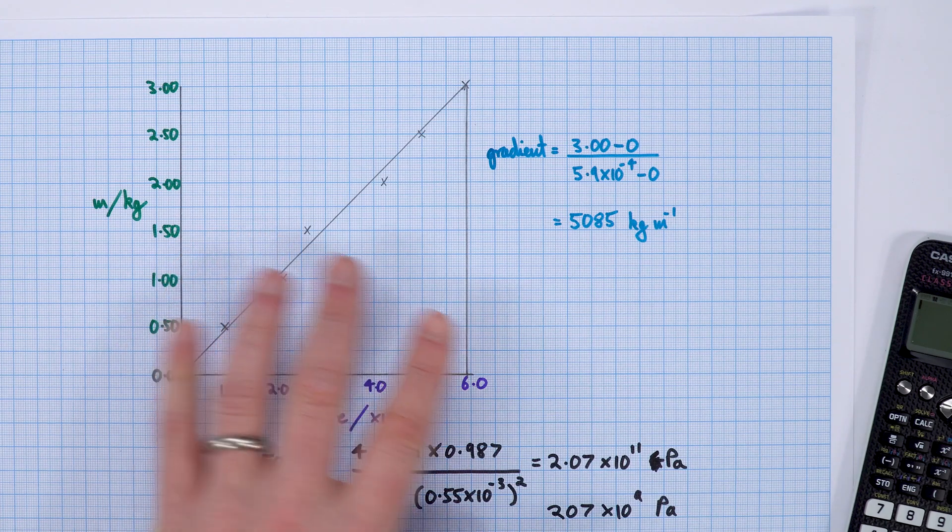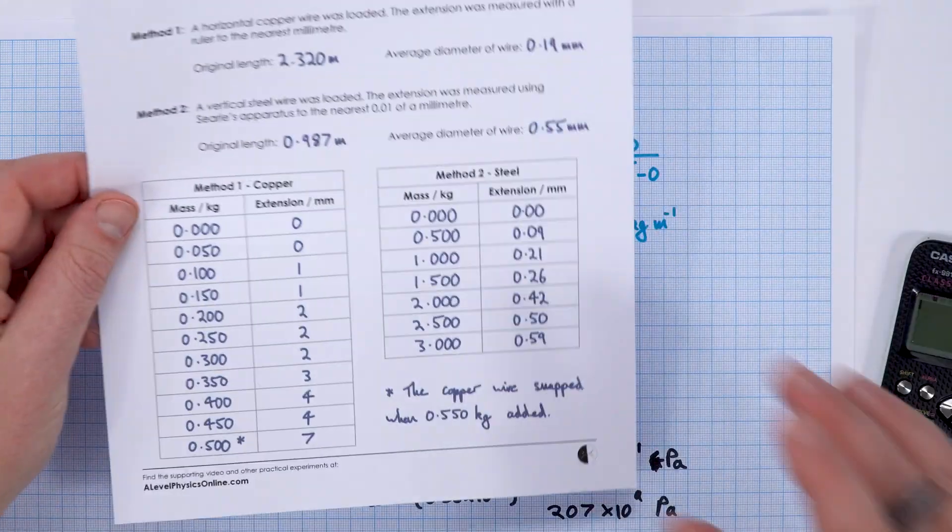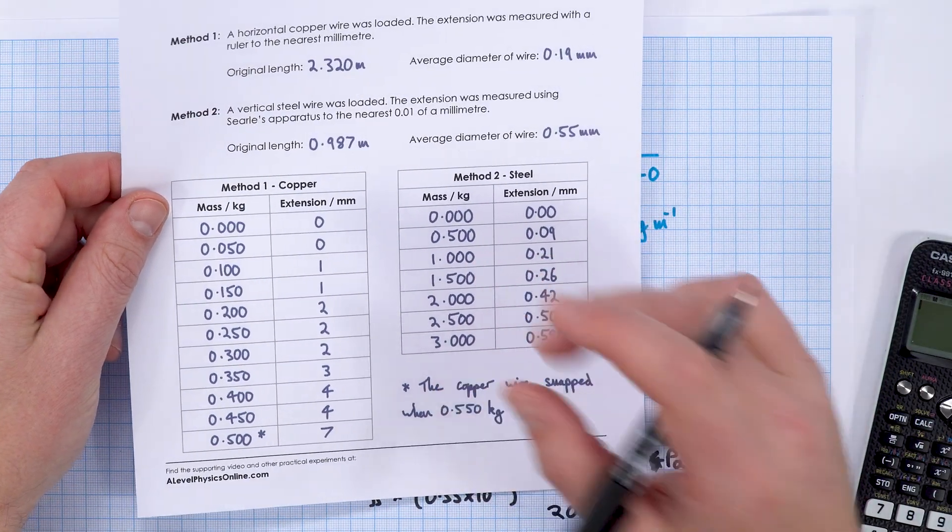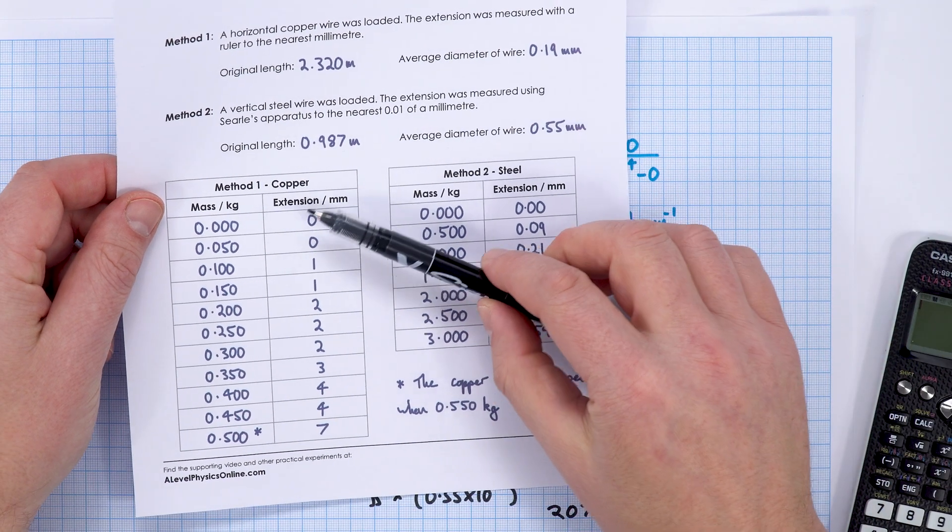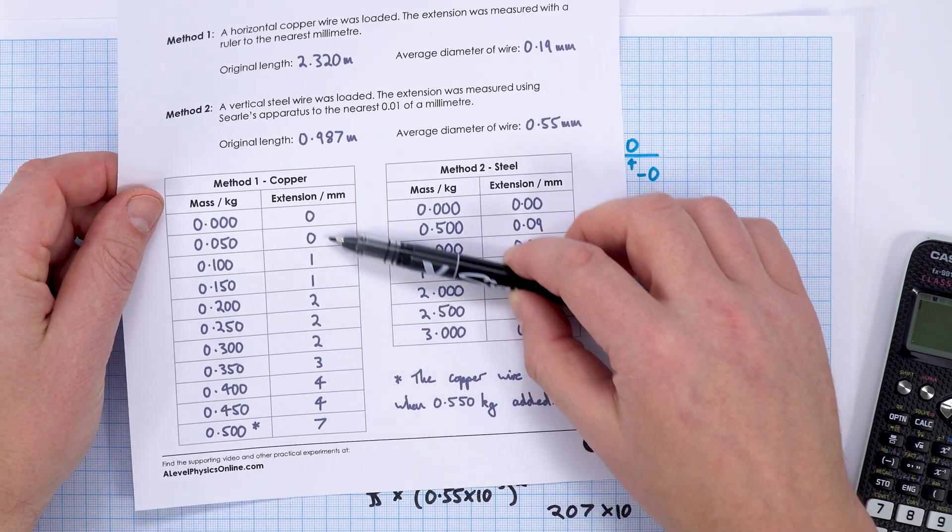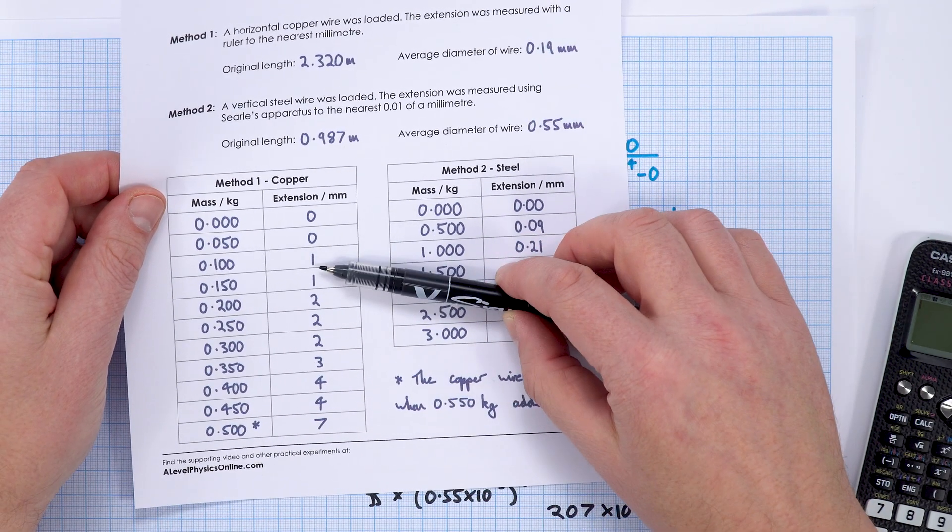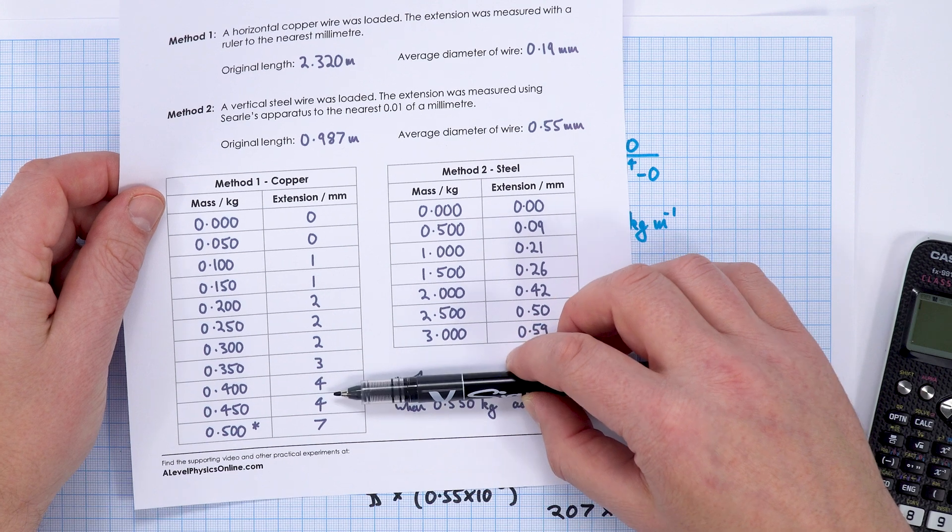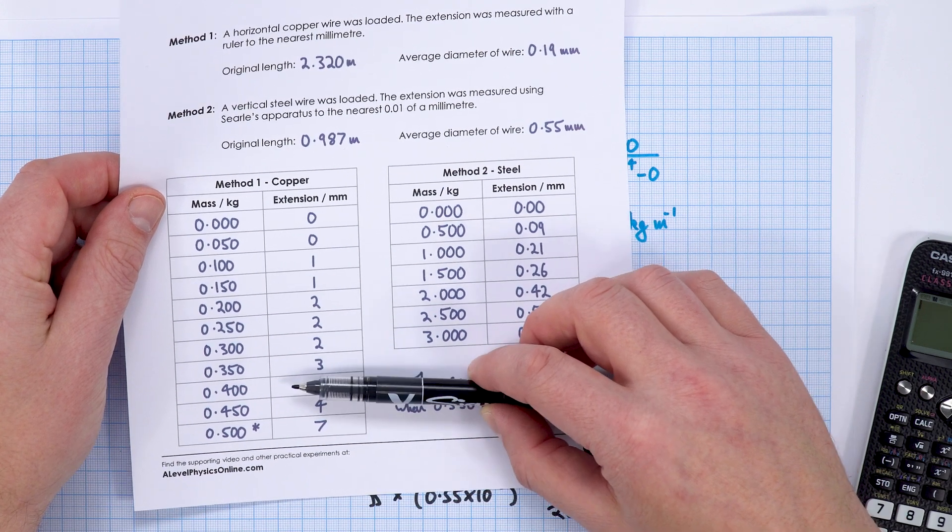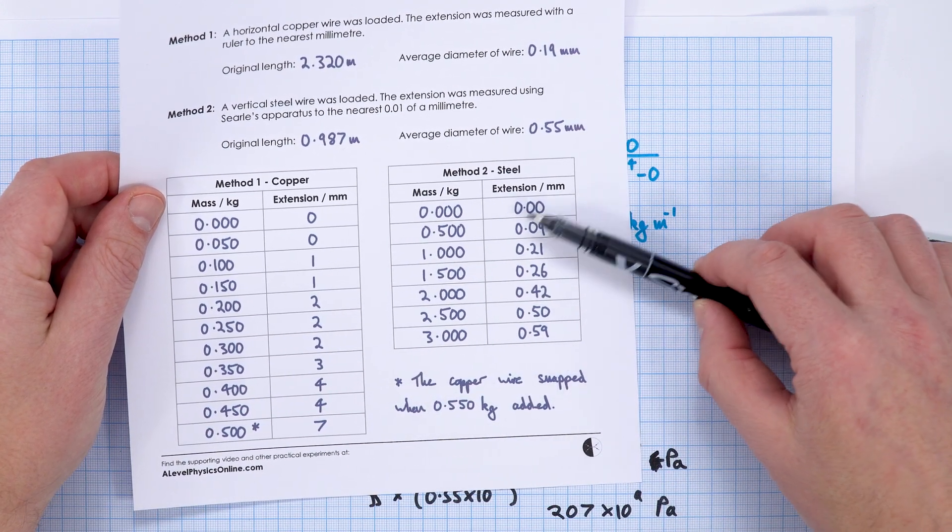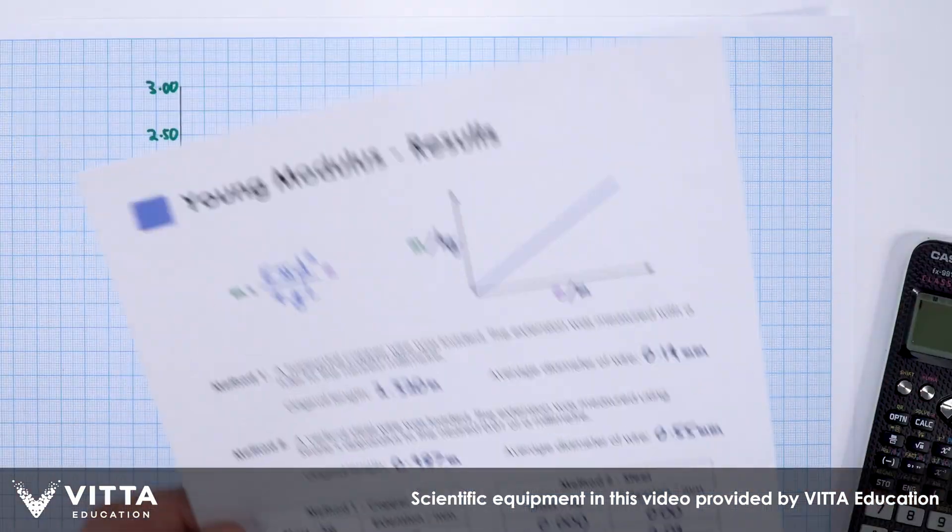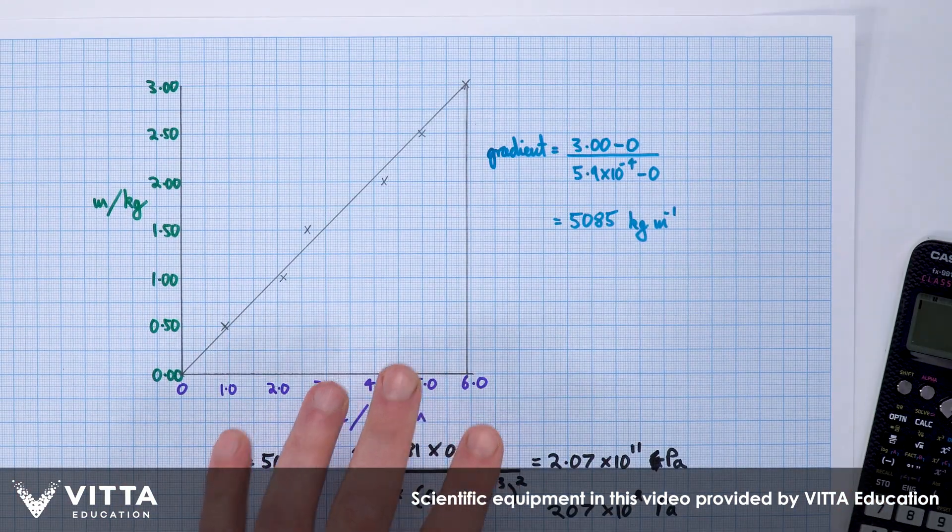That was my approach to looking and analyzing this data. I would say that when you do it with copper, there's going to be a massive percentage uncertainty when you're measuring very small extensions to the nearest millimeter, which is why if you have the vertical method, it can give you better data. So there we go—just some of my values for the Young modulus.